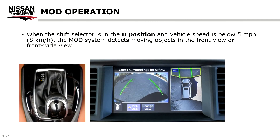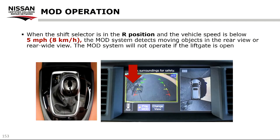When the shift selector is in the D position for drive and vehicle speed is below 5 miles per hour, the MOD system detects moving objects in the front view or front wide view. When the shift selector is in the R or reverse position and vehicle speed is below 5 miles per hour, the MOD system detects moving objects in the rear view or rear wide view. The MOD system will not operate if the liftgate is open.